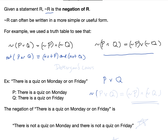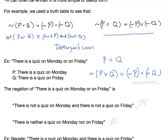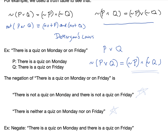If we want to negate p or q, then we know by DeMorgan's laws that the negation of that is not p and not q. So we could write that as: there is not a quiz on Monday and there is not a quiz on Friday.